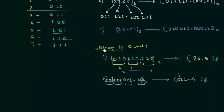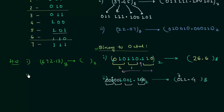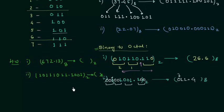This is all for binary to octal conversion. For homework: in the first problem, convert the octal number 672.13 to binary. In the second problem, convert the binary number 1011101.1001 to its octal equivalent. That is all for this presentation — see you in the next one.